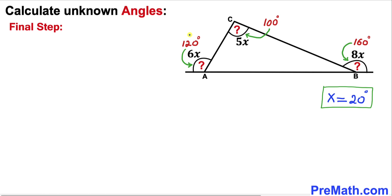So thus our unknown angles turn out to be 120 degrees, 100 degrees, and 160 degrees.